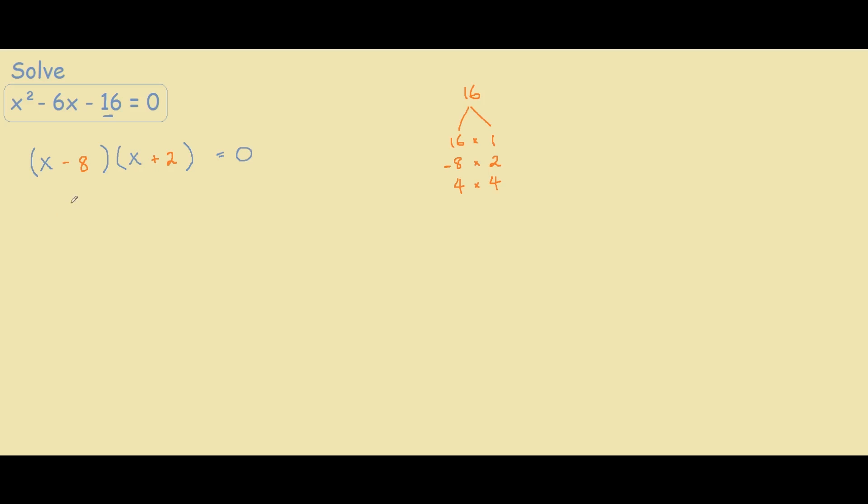To solve this equation, we know that anything times 0 equals 0. So what we want to do is make one bracket equal to 0. So we have x equals 8, because 8 minus 8 equals 0, so 0 times anything equals 0. And on this side, we have x equals negative 2, because negative 2 plus 2 equals 0, and 0 times anything equals 0. So our solutions to this problem are 8 and negative 2.